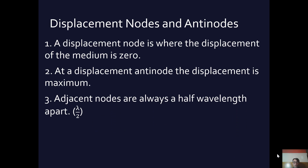Adjacent nodes are always a half wavelength apart. Think of a wavelength: it starts at zero, goes to a maximum, hits zero, goes to a minimum, and comes back to zero. That's a full wavelength with a maximum and a minimum. It goes through zero twice in one wavelength, so the distance between nodes — between zeros — is half a wavelength, lambda divided by two. That's why adjacent nodes and adjacent antinodes are always a half wavelength apart.